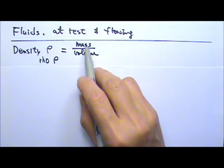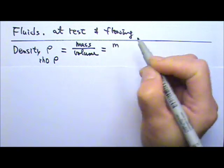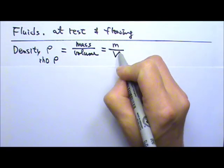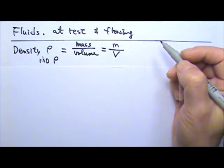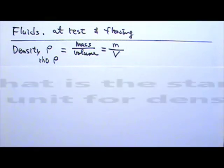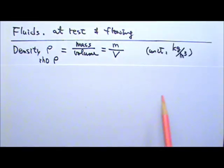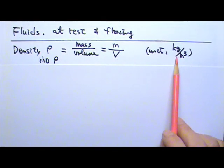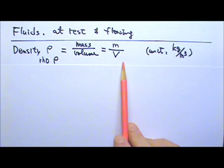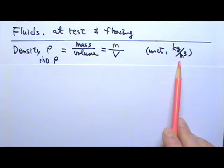Density is mass divided by volume. And we use M for mass and capital V for volume. What do you think the standard unit is for density? The standard unit for mass is kilograms. The standard unit for volume is meters cubed. So it is kilograms per meter cubed.